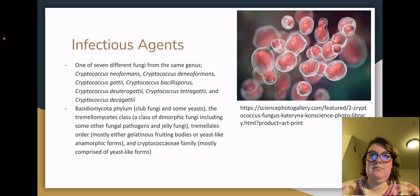These fungi belong to the Basidiomycota, which includes club fungi and some yeast. The Tremelomycetes class, a class of dimorphic fungi, including some other fungal pathogens and jelly fungi. The Tremelomycetes mostly either have gelatinous fruiting bodies or yeast-like anamorphic, that is, asexual forms, and the Cryptococcaceae family, mostly comprised of yeast-like forms.